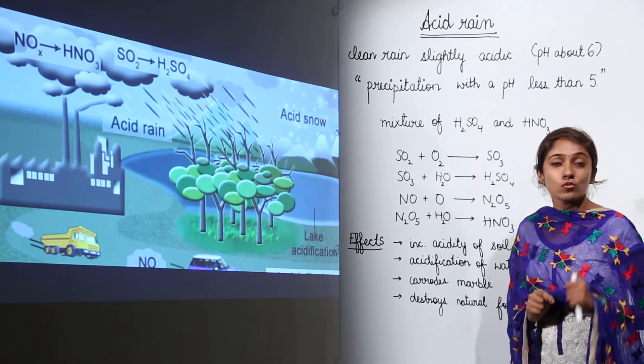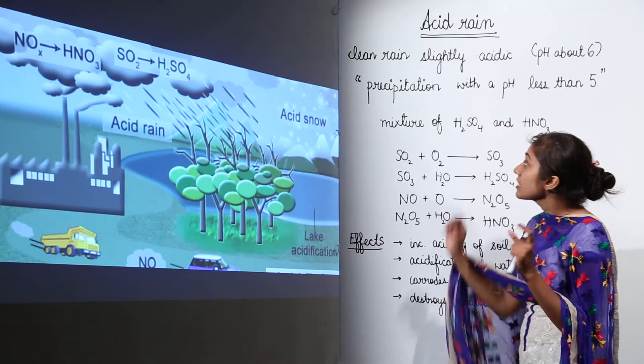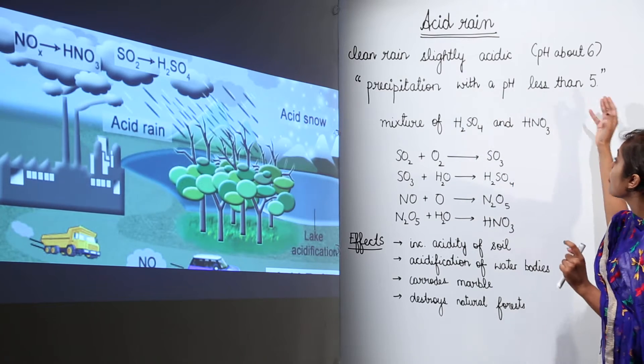So now we are going to discuss what is acid rain. How will you define the term acid rain? You define it as precipitation with a pH less than 5.